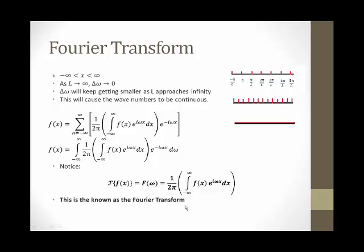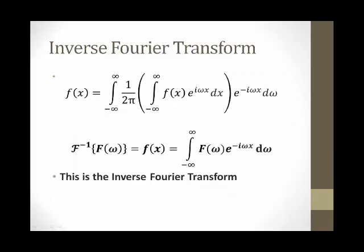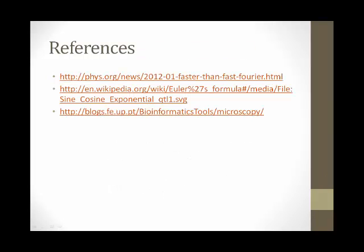Notice that the inside of our function is really just equal to big F of omega, which is 1 over 2 pi times the integral from negative infinity to positive infinity of f of x times e to the i omega x with respect to x. This will be known as the Fourier transform. If we take the Fourier transform of a function f of x, we can represent it as a function of omega. We also have the inverse Fourier transform: by computing the integral from negative infinity to positive infinity of that function of omega times e to the negative i omega x with respect to omega, we can recover f of x. In this video, we have defined formulas for both the Fourier transform and the inverse Fourier transform. The next step would be to look at how the Fourier transform can help us solve PDEs, such as the heat equation. Thank you.